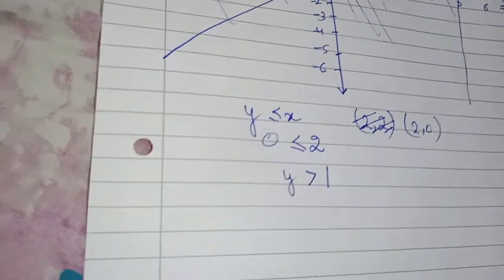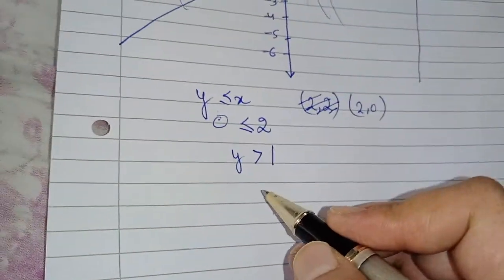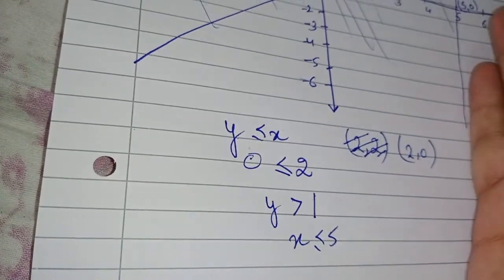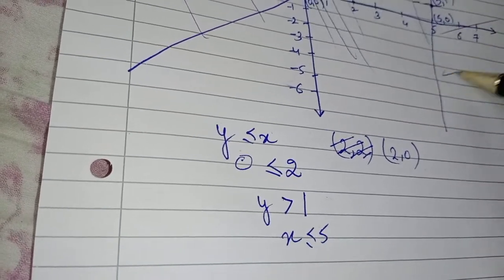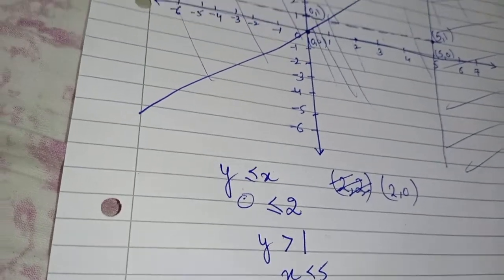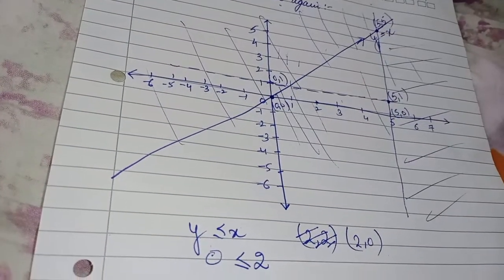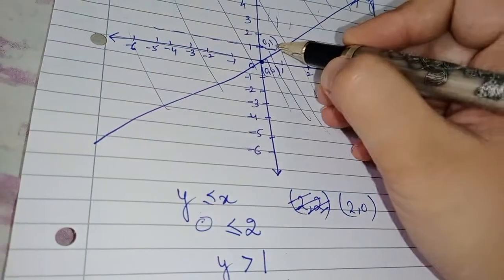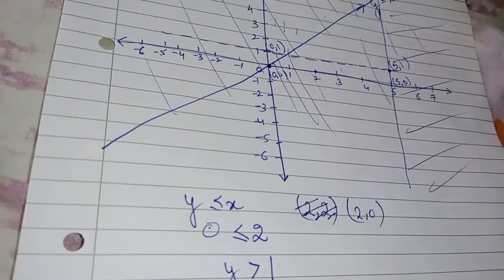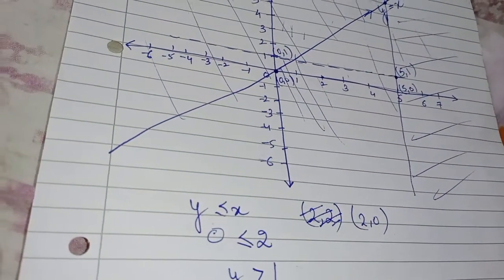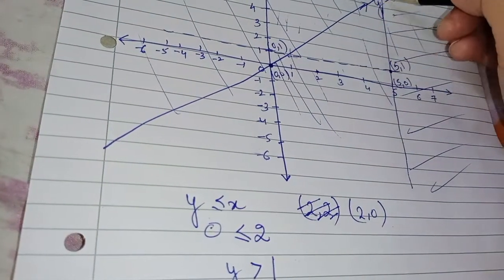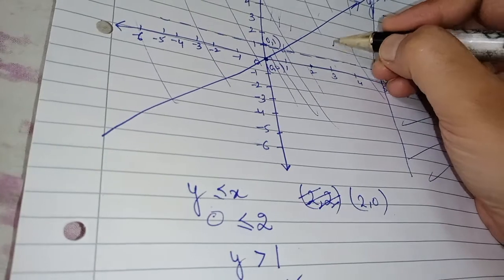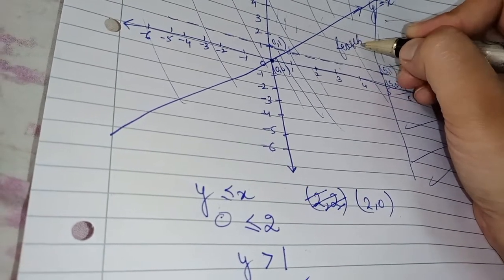So the common unshaded region is this triangle — I have shaded above, I have shaded below, and I have shaded to the right. What is left is this triangle, which is the feasible region.